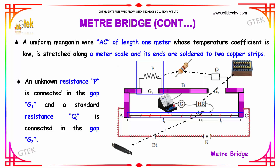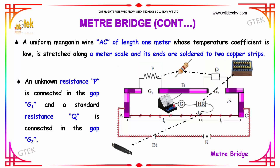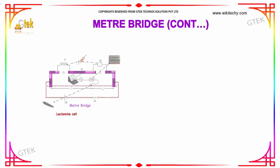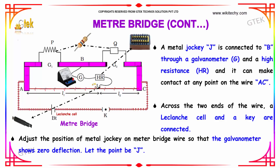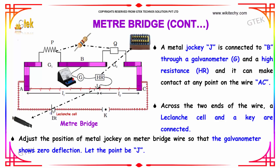An unknown resistance P is connected in the gap G1, and a standard resistance Q is connected to the gap G2. A metal jockey J is connected to the bridge B through a galvanometer G and a high resistance HR, and it can make contact at any point in the wire AC. Across the two ends of the wire, a Leclanche cell and a key are connected.